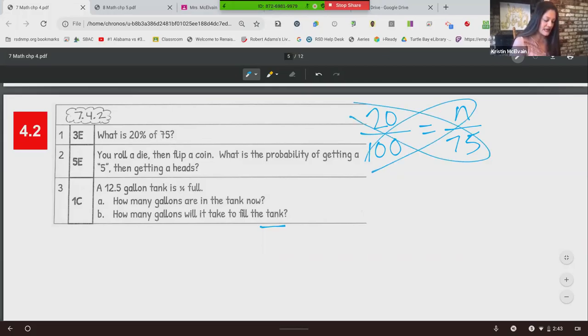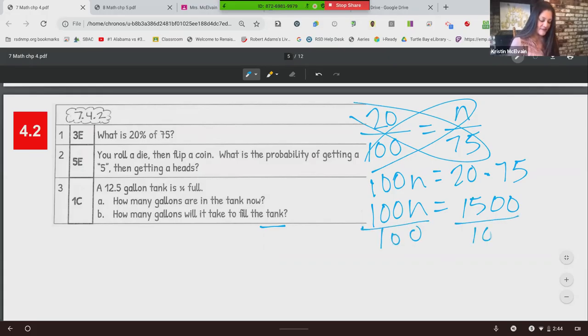So through cross multiplication, this and like this gives us 100N equals 20 times 75. So my calculator, I'm going to figure that out. 20 times 75 gives us 1,500. Then we're going to solve for N, divide each side by 100. Cancels out, gives us 15 over 1. So N is 15. 15 is 20% of 75.